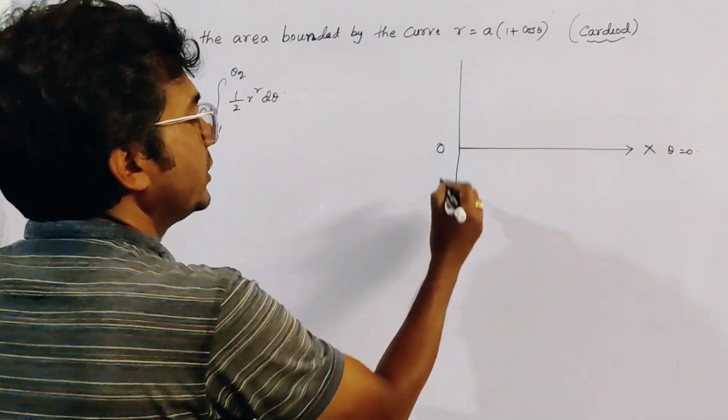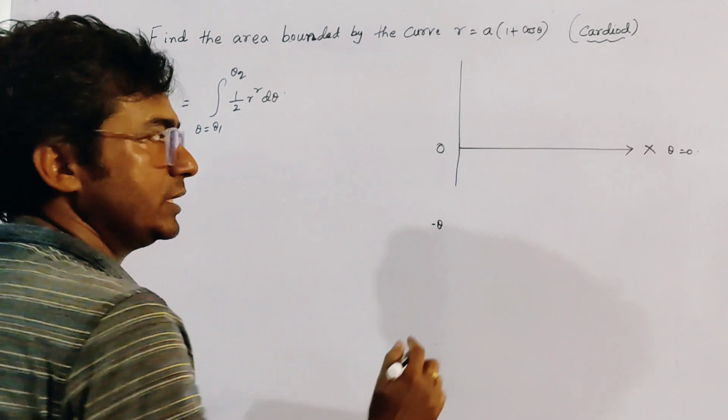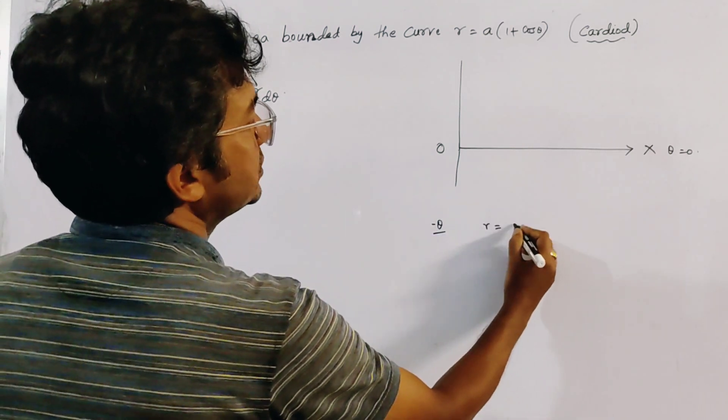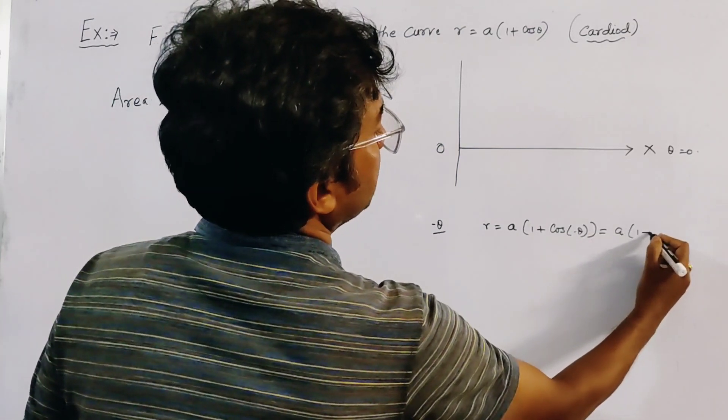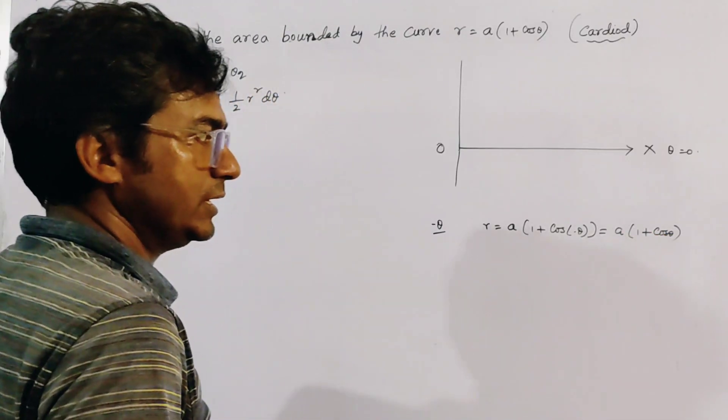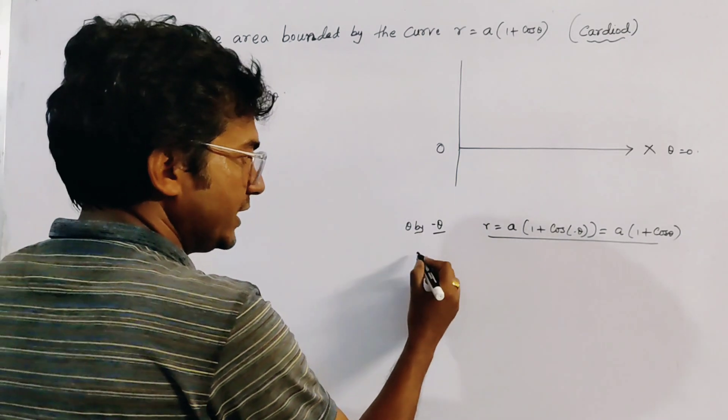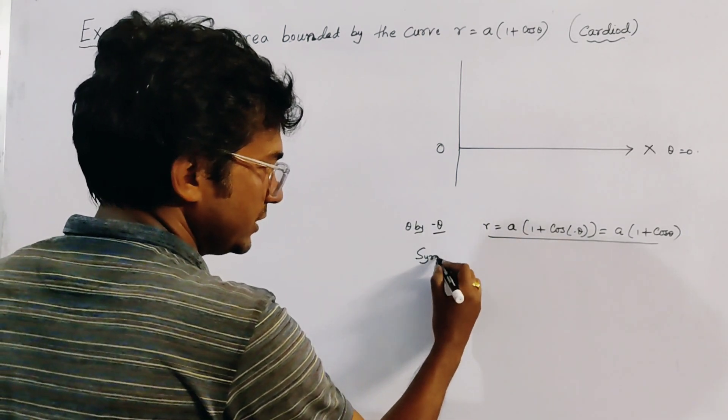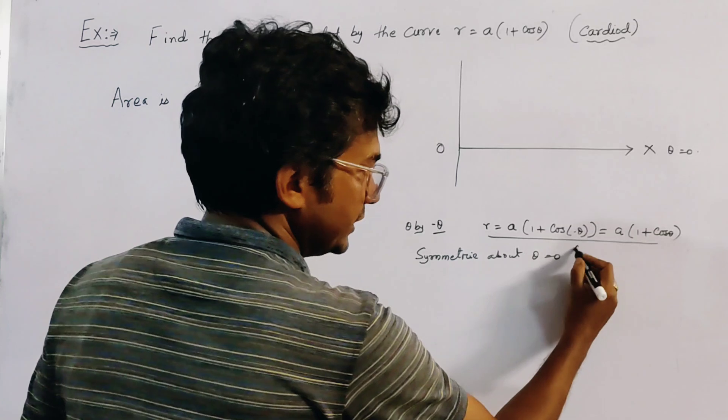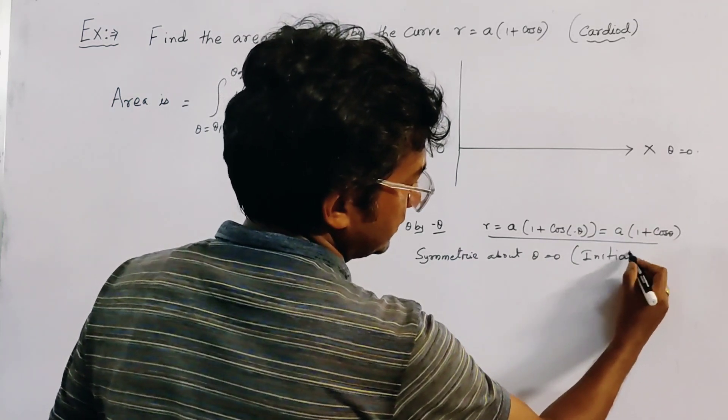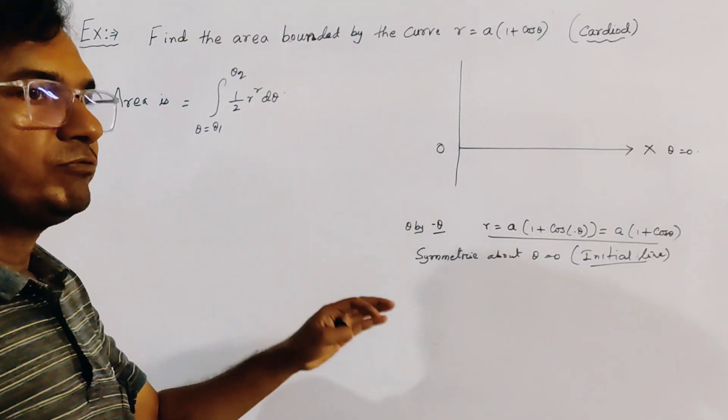Now put minus theta in place of theta, then we get R equal to A into 1 plus cos of minus theta, that is A into 1 plus cos theta. There is no change if we replace theta by minus theta. So we say that this curve is symmetric about theta equal to 0, that is about the initial line. This is an important property of tracing of curves.